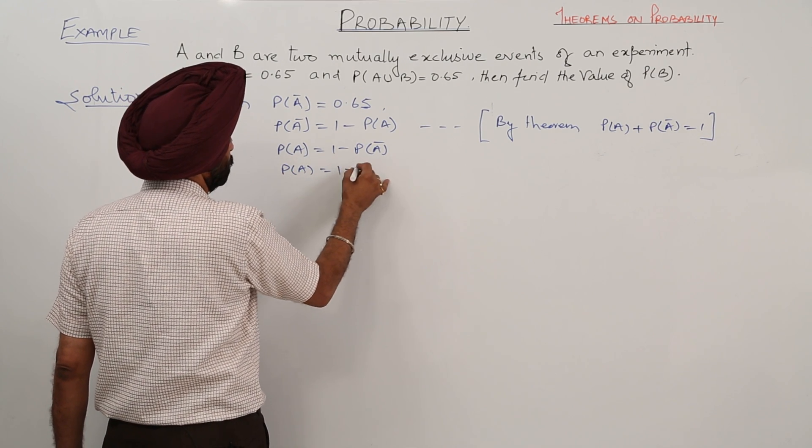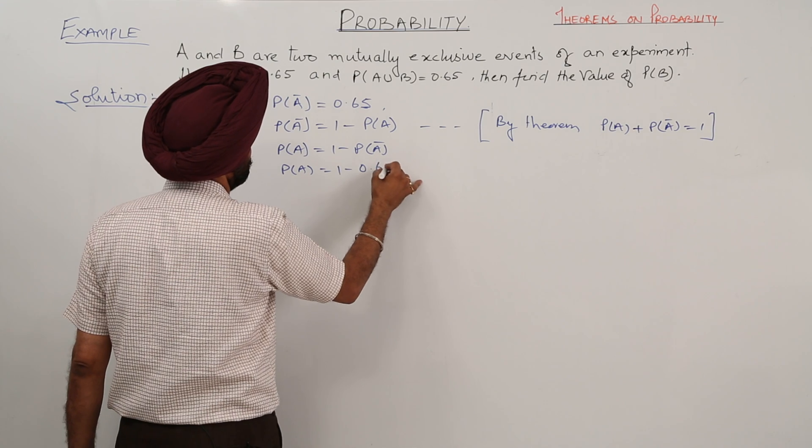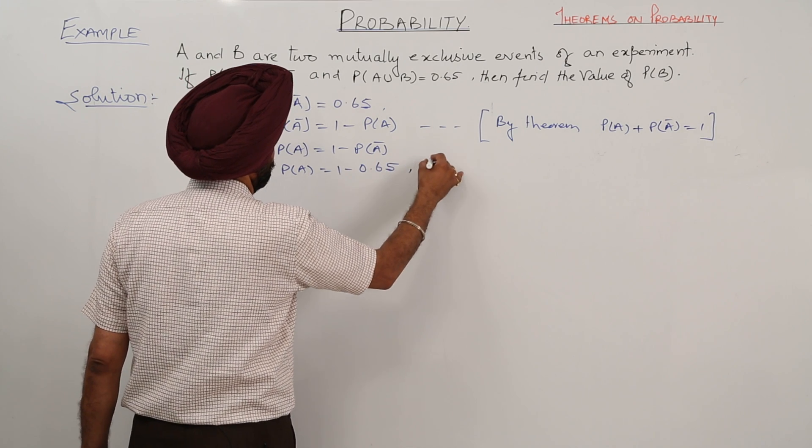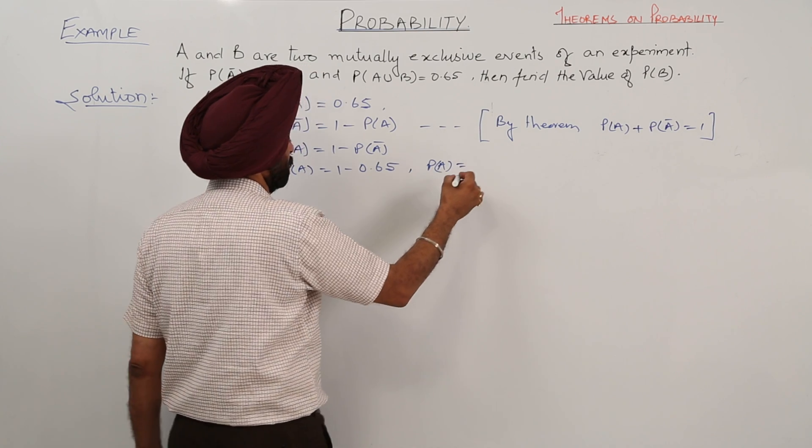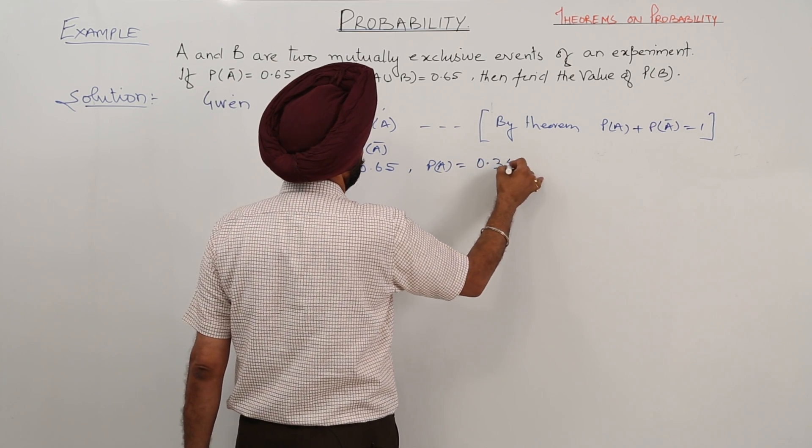P(A) is equal to 1 minus 0.65. Probability for A is now 0.35.